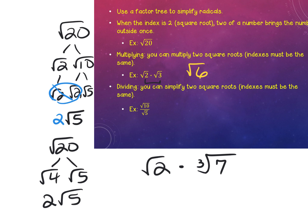When you divide two square roots or two cube roots, the indexes must be the same. For example, I could divide 10 by 5 and get the square root of 2. You can simplify just like a fraction, but it still stays under the square root symbol.